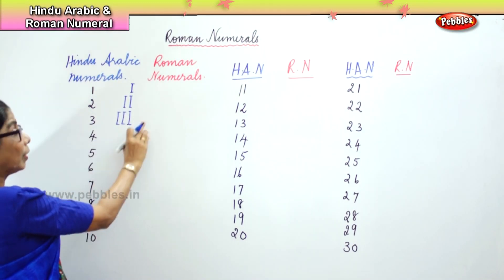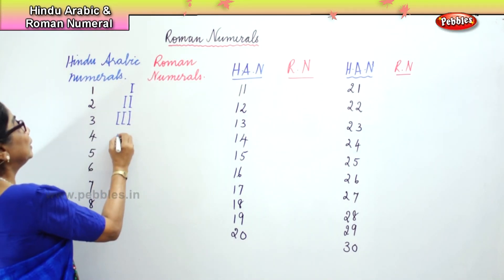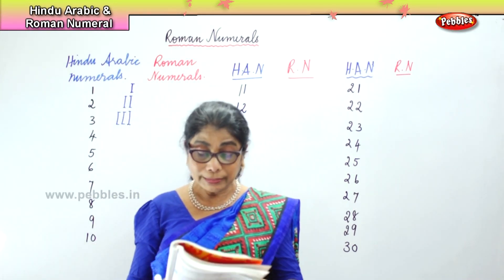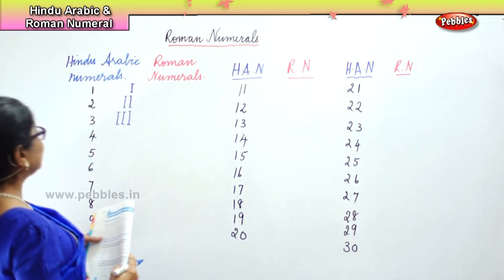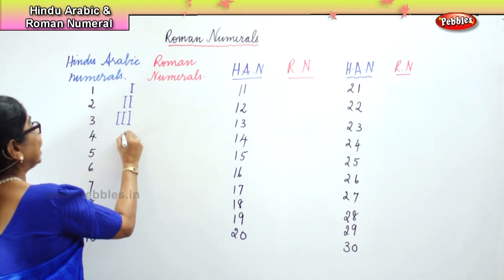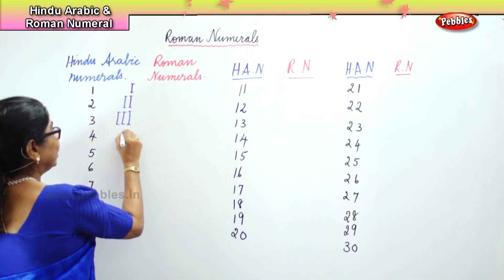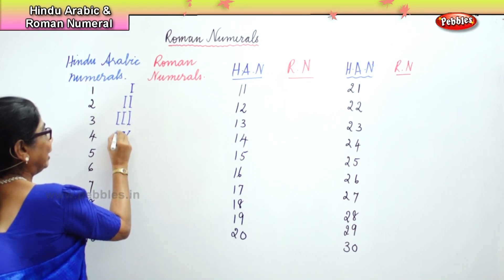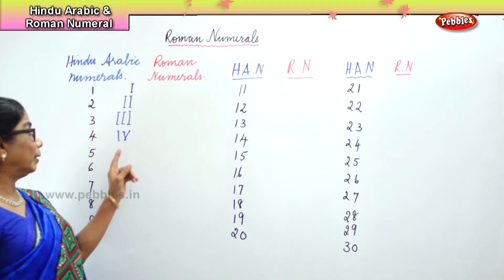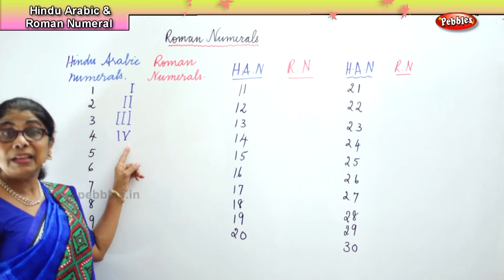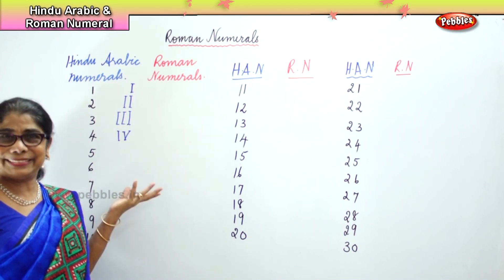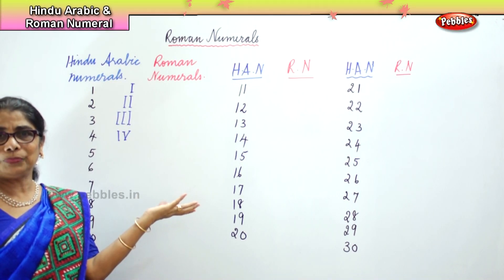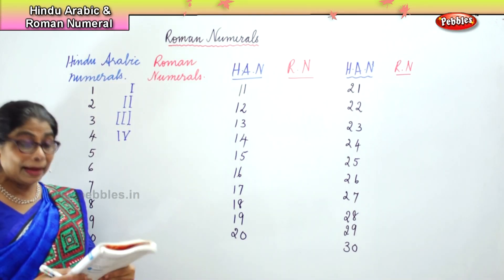Number four. In number four, we learn the rule: to the left of a greater number — suppose I write number five — if there is a number to the left of the greater number which is five, then we subtract it. From the five, take away one. That's rule number two.